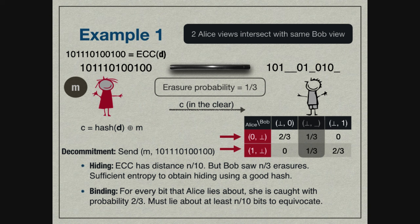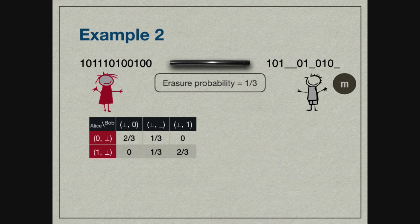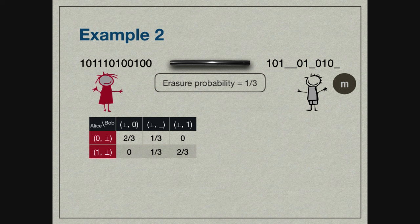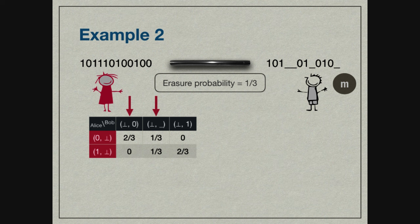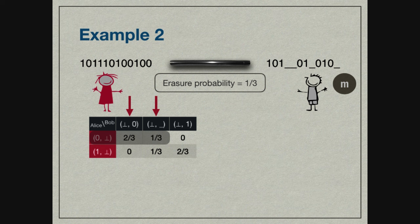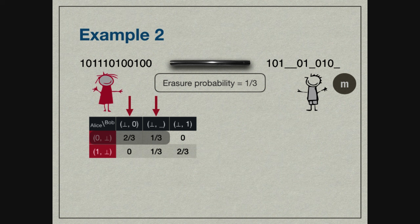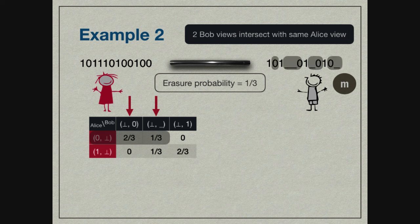But this is not true. Remember I told you we want commitments both from Alice to Bob and back from Bob to Alice also. We want to use the erasure channel in the same direction, going from Alice to Bob, to get a commitment from Bob to Alice. Let's try to look for the property I just mentioned. In order to get a commitment from Bob to Alice, let's look for two views of Bob that intersect with the same view of Alice. In this example, when Bob got an output zero and when he got an output an erasure, Alice's view corresponding to both these could have been input zero.